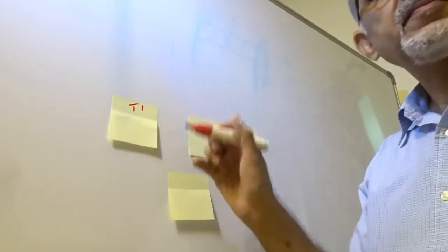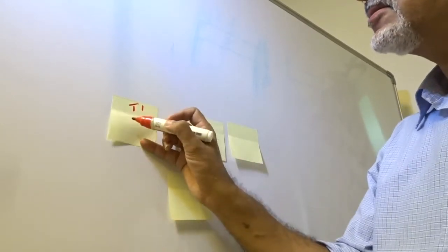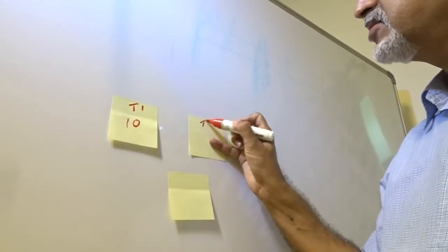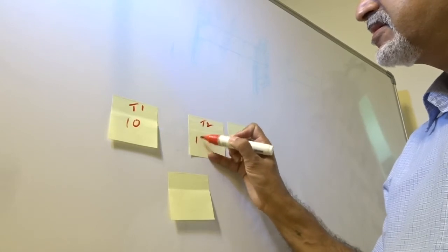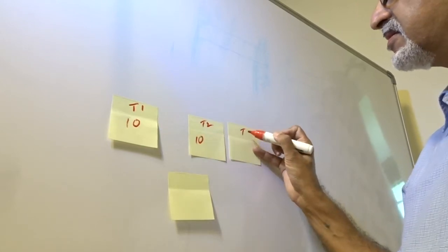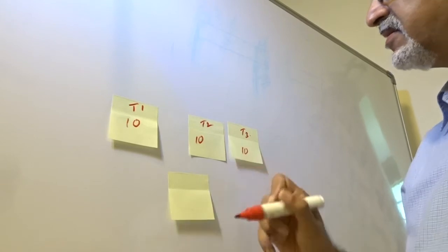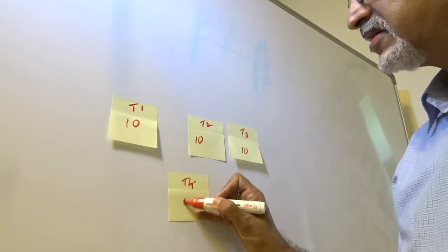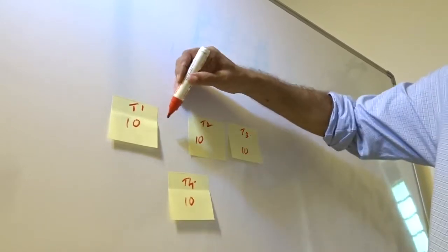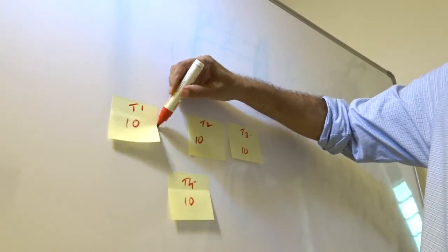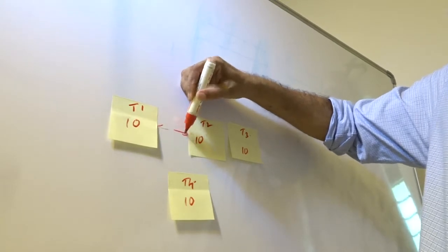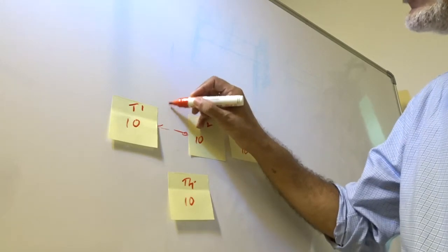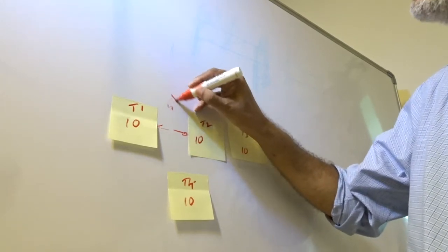Let us assume this is a project network. Task 1 takes 10 days to complete, Task 2 needs another 10 days, Task 3 takes another 10 days, and Task 4 needs another 10 days. There is a constraint here: Task 2 can start only after a five-day waiting time after Task 1.